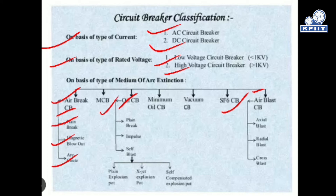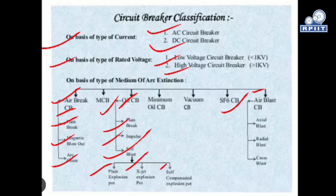The oil circuit breaker has three categories: plain break, impulse type, and self blast. The self blast type injects oil as the arc quenching medium. Sub-types include plain expansion port, explosion jet port, and cell-compensated explosion flow port, as well as minimum oil circuit breakers.